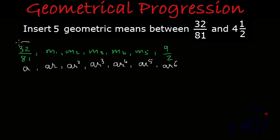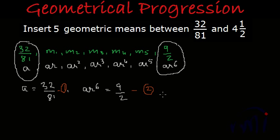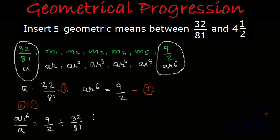We have the value of the first term and the seventh term. So A = 32/81 (equation 1), and AR⁶ = 9/2 (equation 2). Dividing equation 2 by equation 1 gives AR⁶ / A = (9/2) / (32/81).